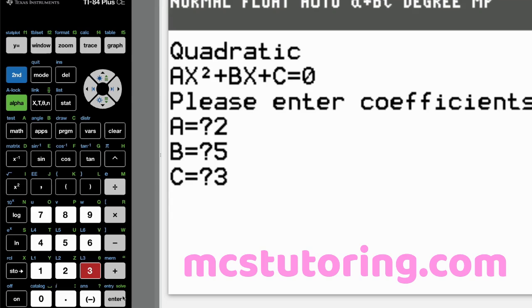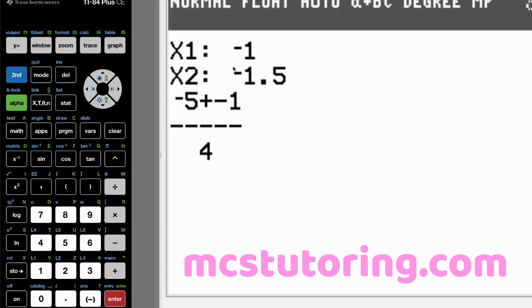So let's just say we had 2x squared plus 5x plus 3, and let's see what we get here. We get x1 is negative 1, x2 is negative 1.5. We had to do the discriminant form. It's negative 5 plus or minus 1 over 4, which is pretty awesome.